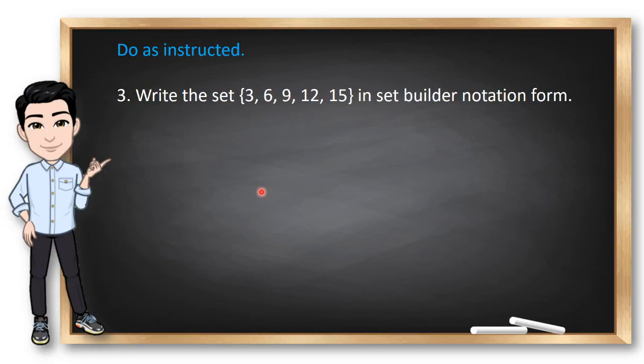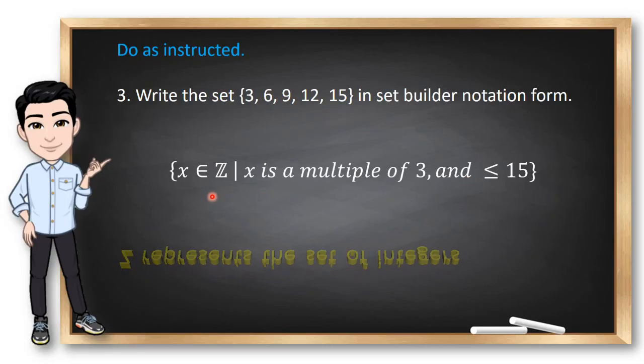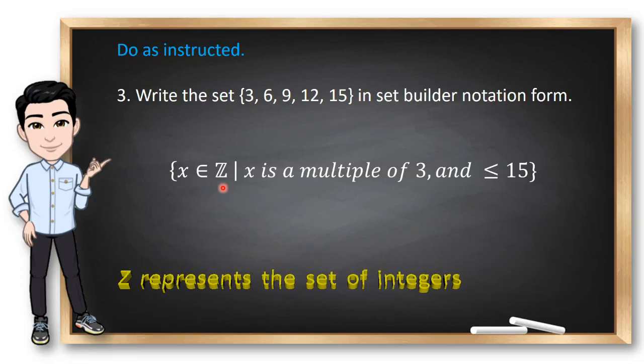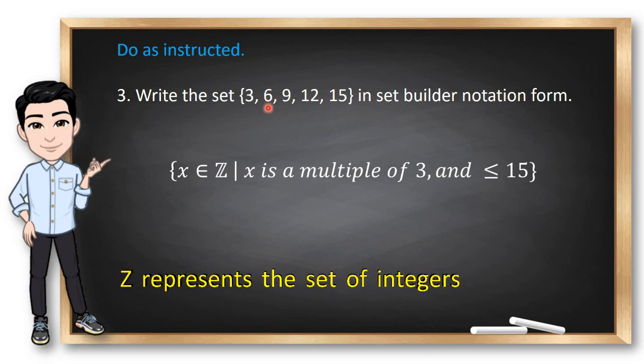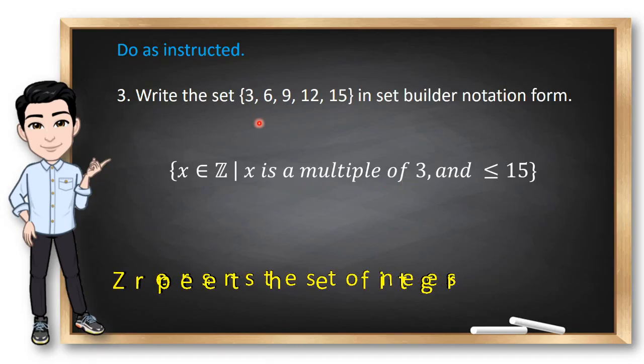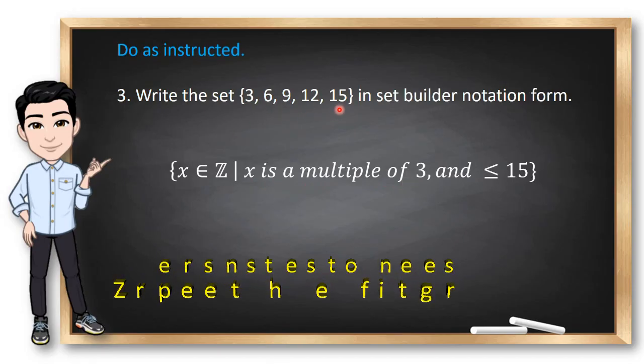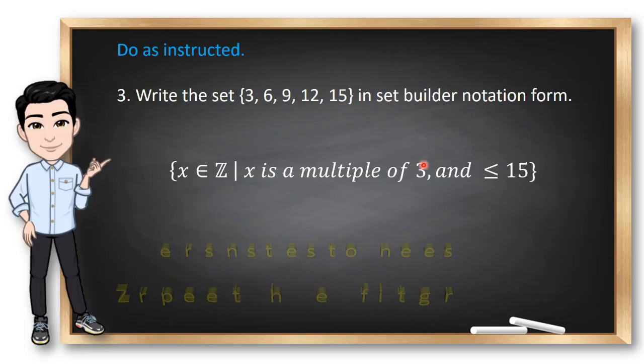Now, how about this? Let us write this set in set-builder notation form. Ready for the answer? Okay. The first thing that we need to do is to specify that x is an element of the set of integers. Why? Because 3.1, 3.2 are not allowed in the set. So, we need to specify that they are all integers such that x is a multiple of 3 because these numbers are all multiple of 3. But of course, they should be less than or equal to 15.